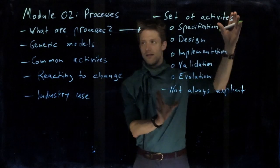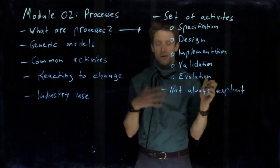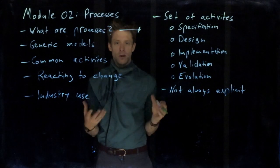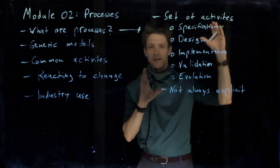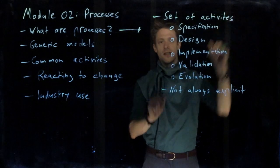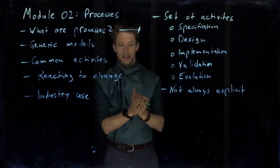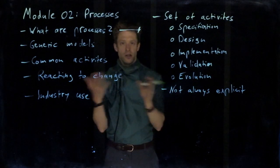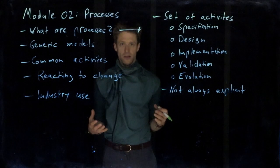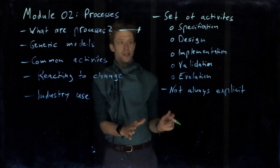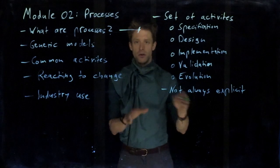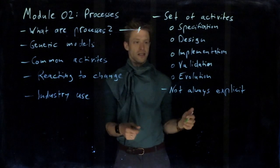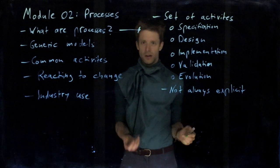So these are what processes are, and the reason we have them is that we can discuss how software is developed in a good way, in a systematic way. And we can give these kind of specifications, these structured sets of activities to, for example, companies and say this is a good practice, this is something that you should follow so that your software product has the right quality. Because remember, software engineering is all about having a systematic approach so that the quality gets better, the quality gets predictive, for example. So this is why we have these process models.